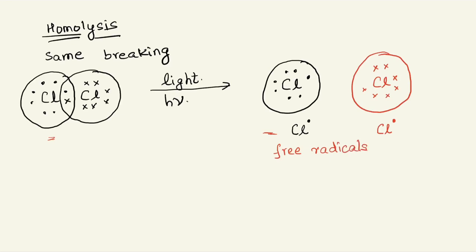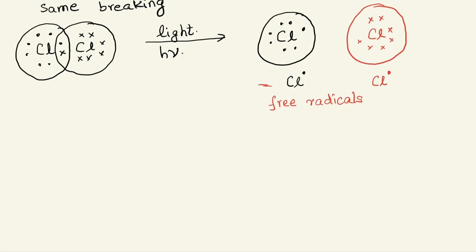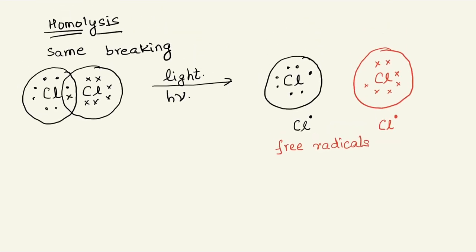In this particular example it is like a neutral atom of chlorine, but there are other examples of homolysis as well, which we will cover during the various mechanisms in organic chemistry. So in other words, when homolytic bond fission or homolytic bond cleavage takes place, free radicals are formed.